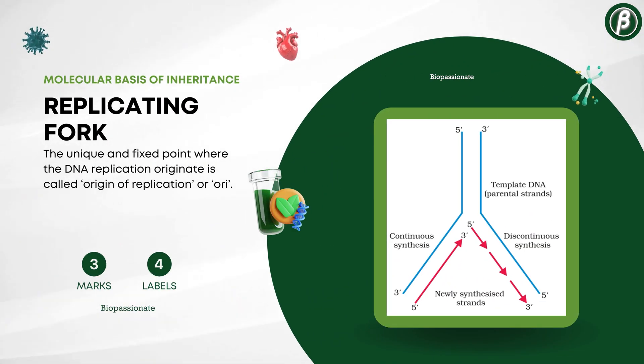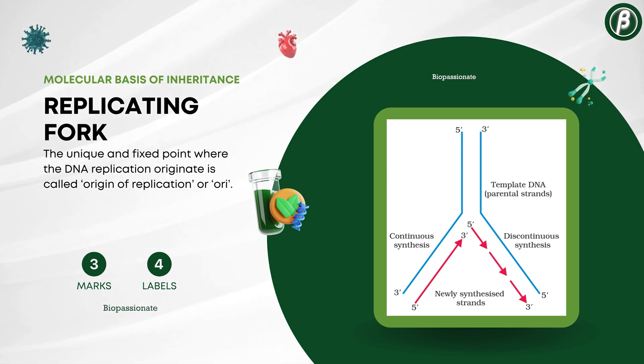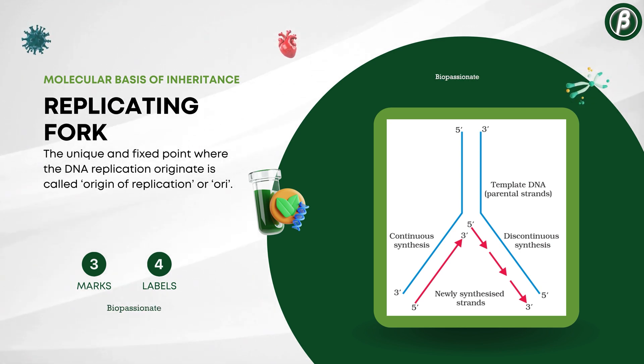Number 9: The replicating fork of DNA, for 3 marks with a minimum of 4 labels.